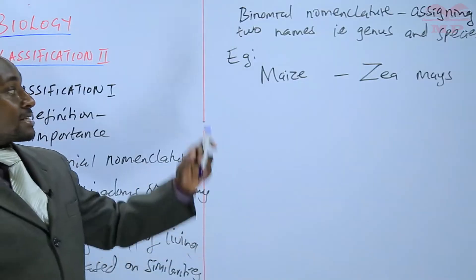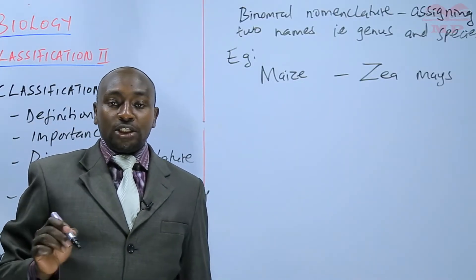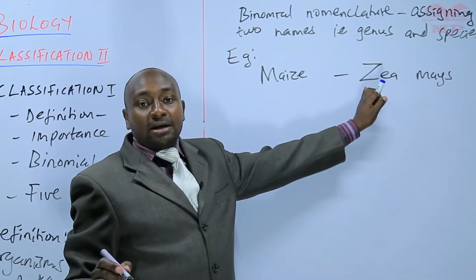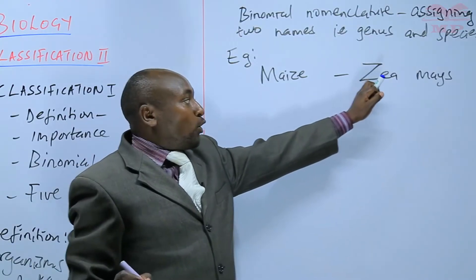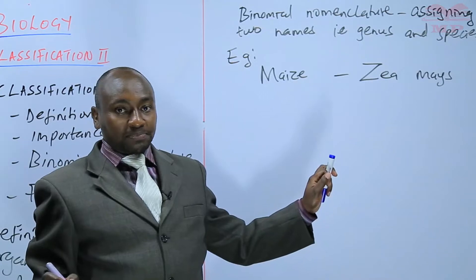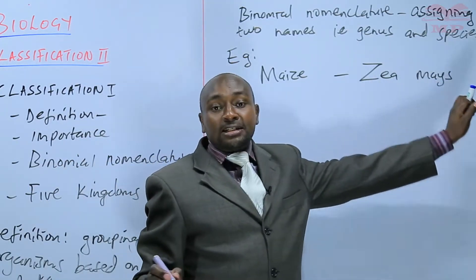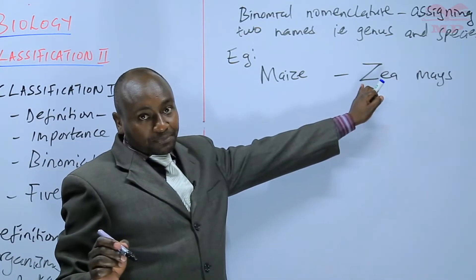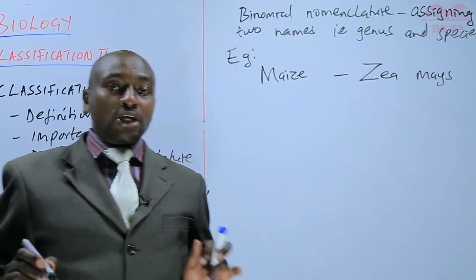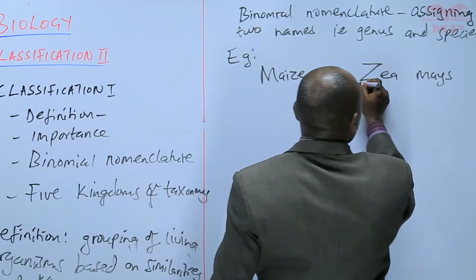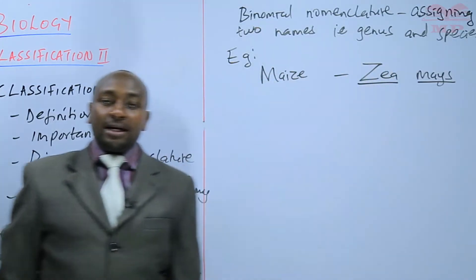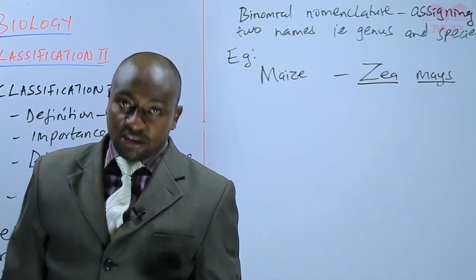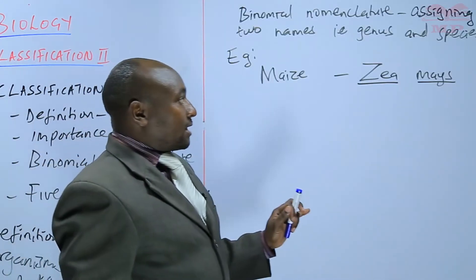When you are writing that scientific name, there are some rules that we need to follow. Rule one: the genus name, or the first name, must start with a capital letter and all the other letters should be small, whereas the species name should be written in small letters, as indicated here. Rule two: the two names should be underlined separately — not using one line, but two separate lines to show that there are two different names.